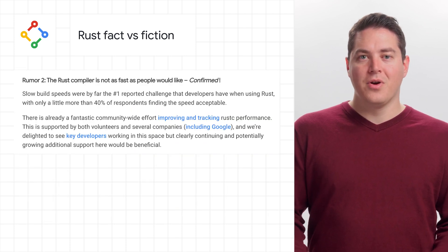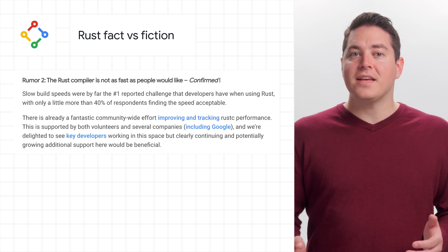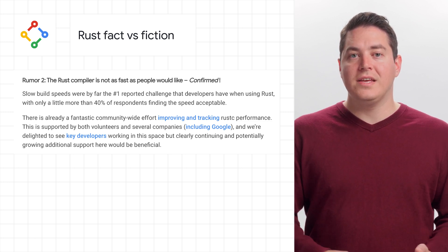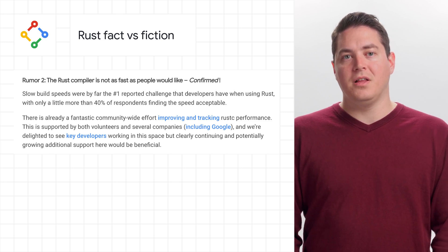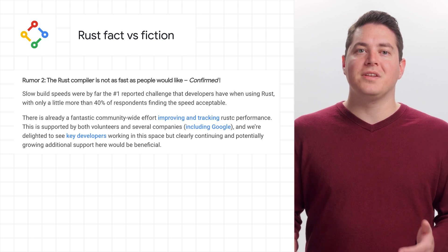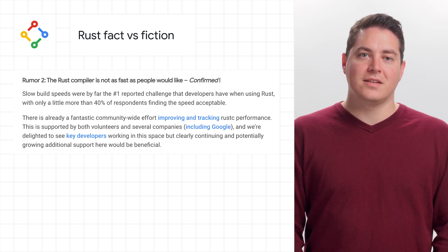Rumor number two: the Rust compiler is not as fast as people would like it to be — which is confirmed by the developers. Only about 40% of respondents are finding the speed acceptable.